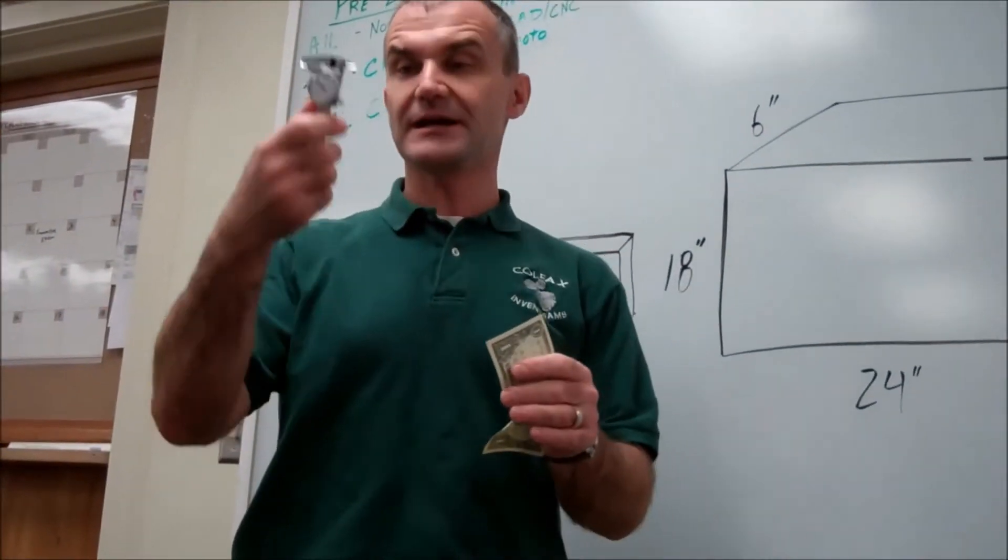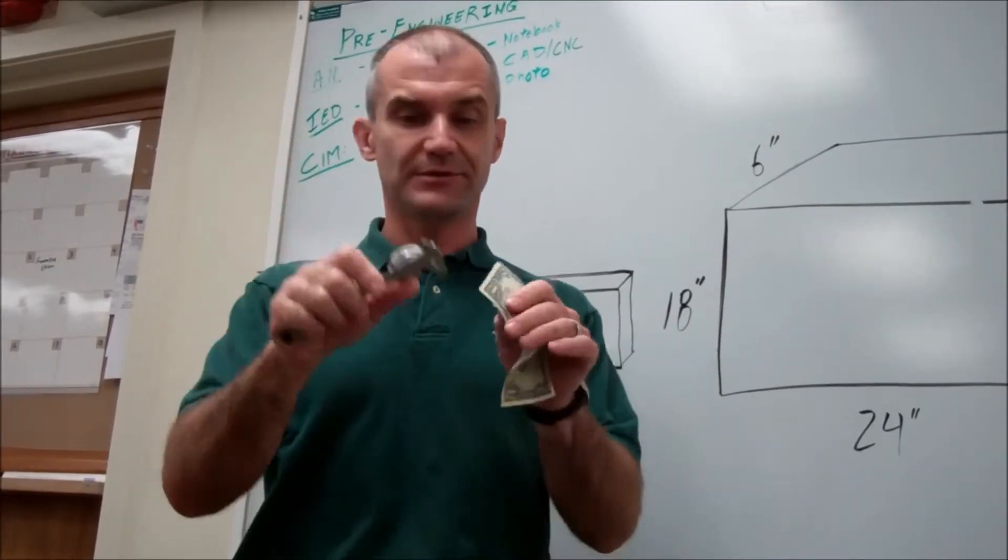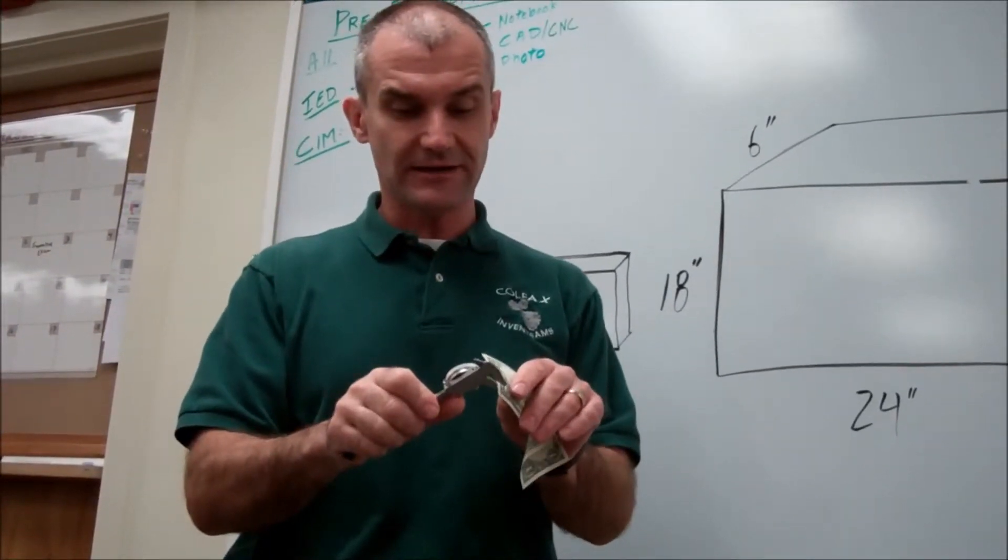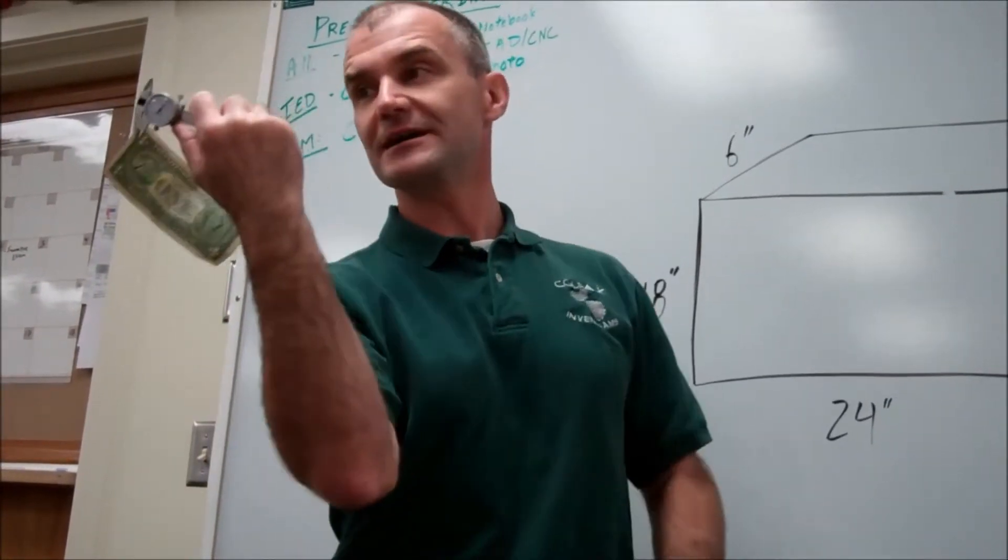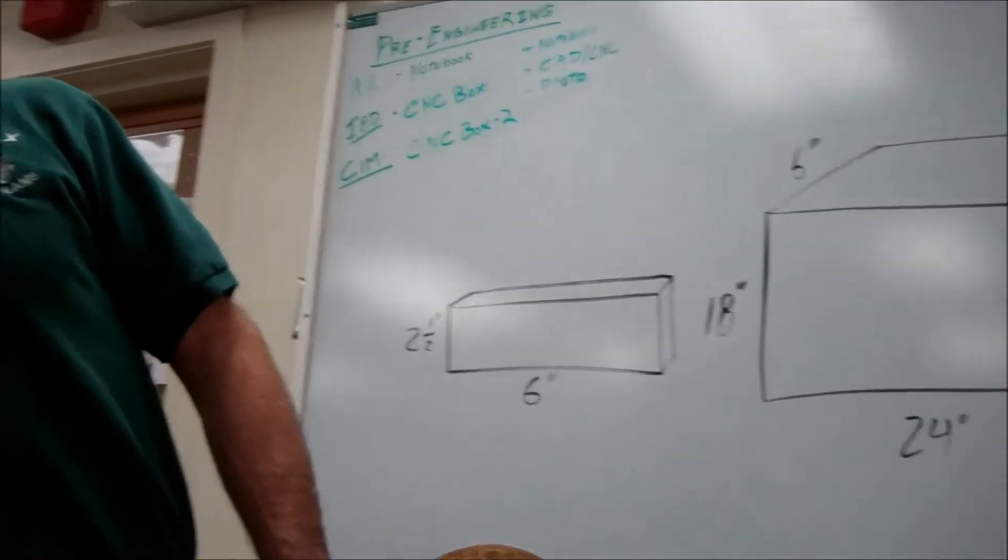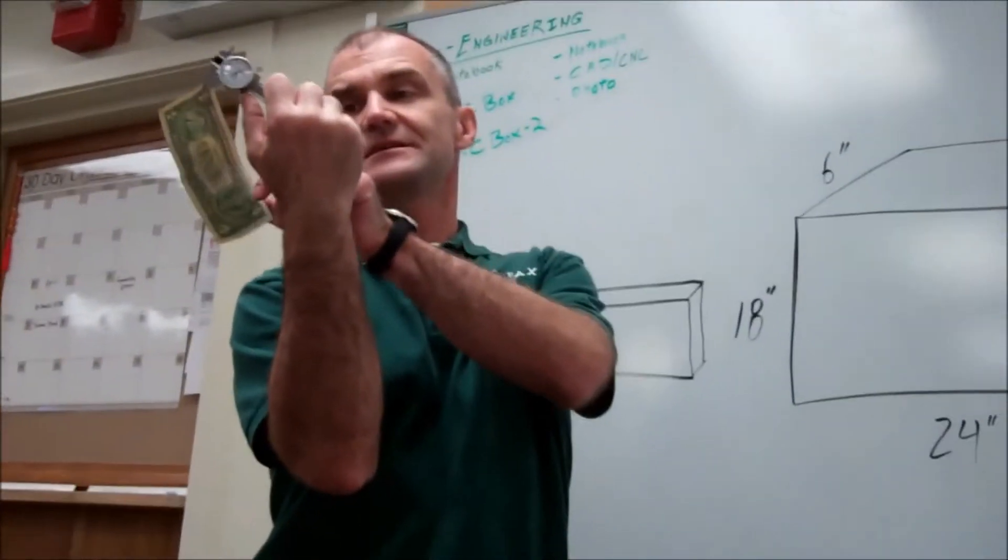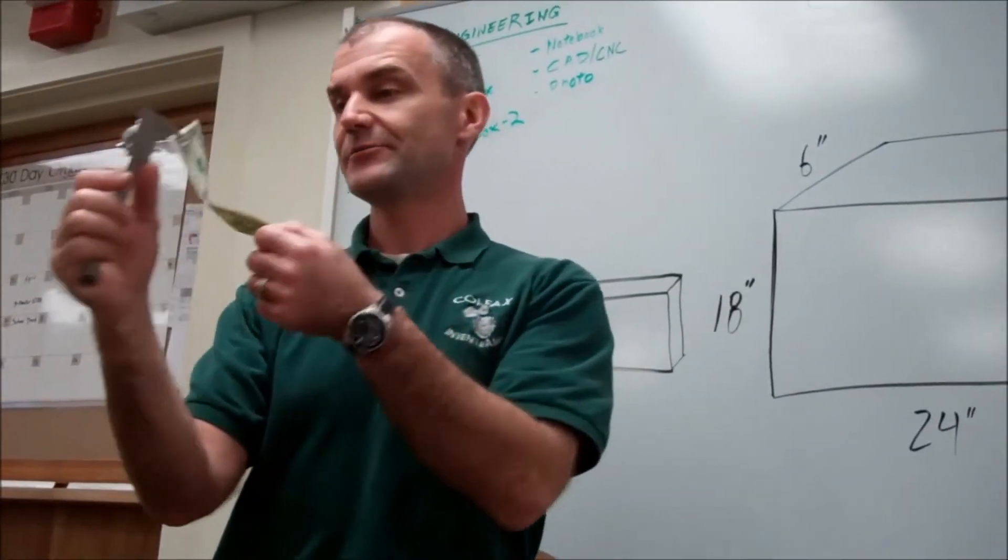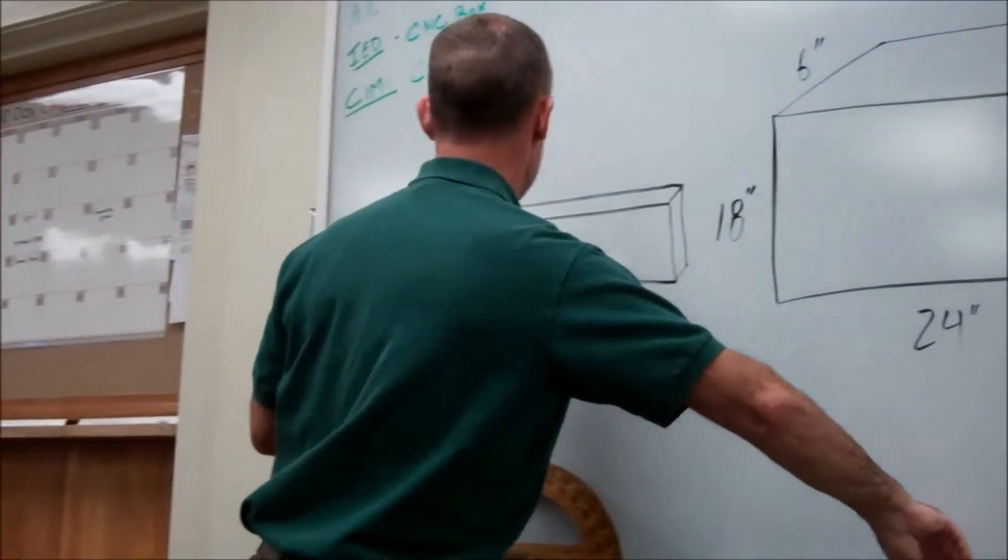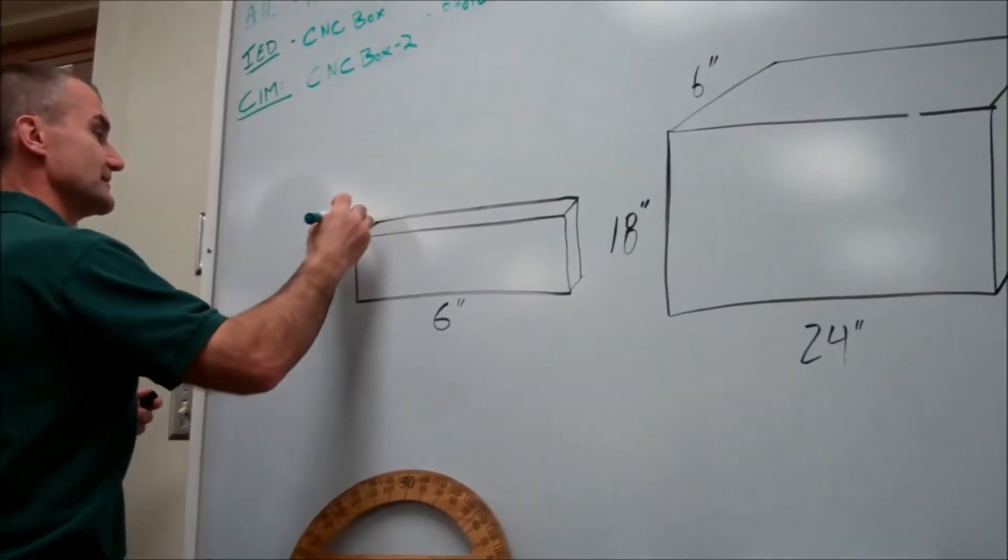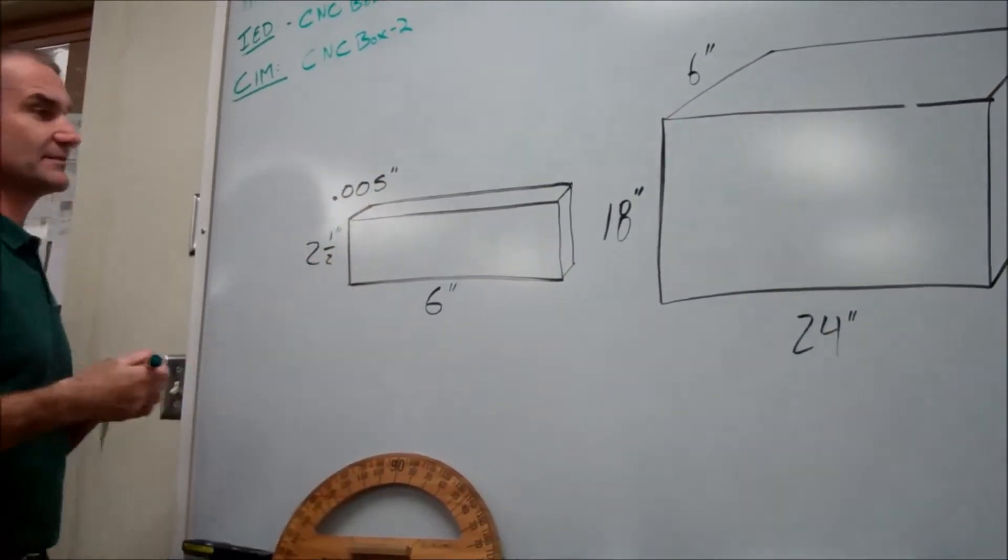So I'm going to use my, what's this called again, Nick? Caliper. Caliper. So I'm going to use my dial caliper to see the thickness of that dollar bill. So how thick is that? Yeah, five thousandths of an inch. So a bill is five thousandths of an inch thick. So the thickness of this is .005, five thousandths of an inch.